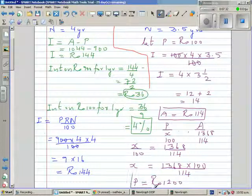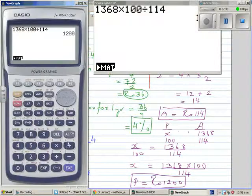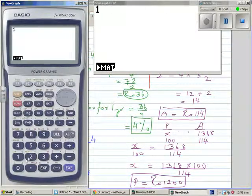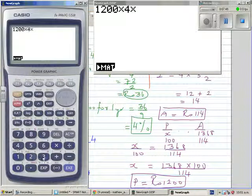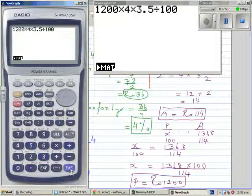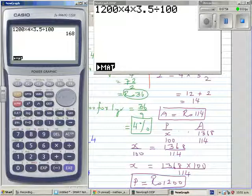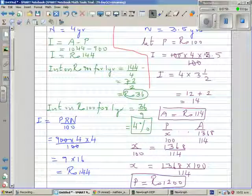And you can confirm backwards. Okay, let's use a calculator. So P × R × N divided by 100. So 1,200 times 4 times 3.5 divided by 100 will give you 168 is the interest. And 1,200 plus 168 is 1,368.